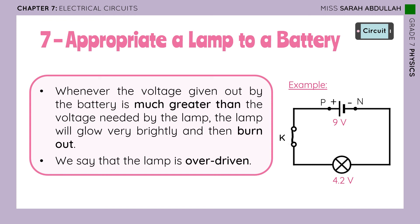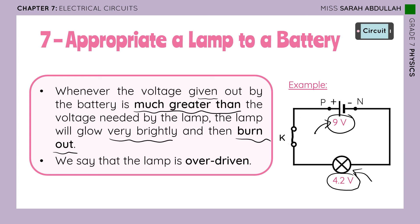In the second experiment, we changed the battery to 9 volts and you saw what happened to the lamp — it lit strongly for a few seconds and then burned out. Why? Because the voltage given out by the battery is much greater than the voltage needed by the lamp. It's too much electricity. Whenever the voltage given out by the battery is much greater than the voltage needed by the lamp, the lamp will glow very brightly and then burn out.